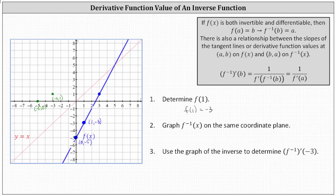And the graph of f of x contains the point three comma one, and therefore the point one comma three must be on the graph of f inverse of x, which is here. Now we can go ahead and graph f inverse of x. It is going to be the line passing through these three green points, and would look something like this. This is the graph of f inverse of x.